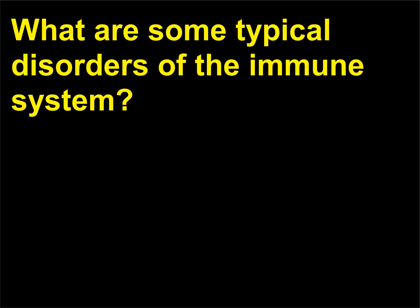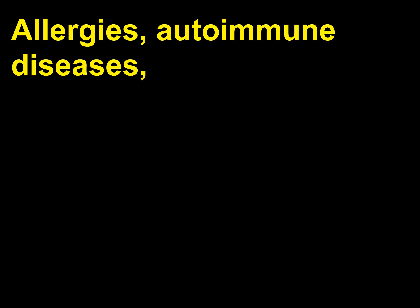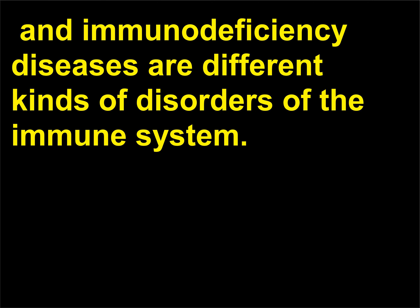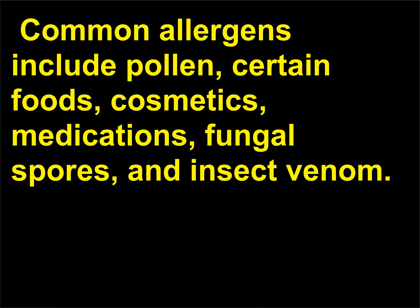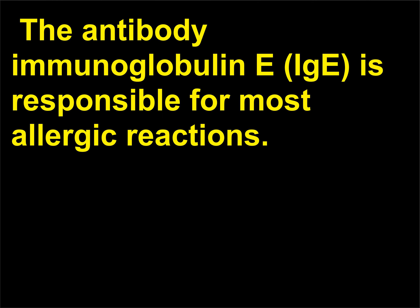What are some typical disorders of the immune system? Allergies, autoimmune diseases, and immunodeficiency diseases are different kinds of disorders of the immune system. Allergies are abnormal sensitivities to a substance that is harmless to many other people. Common allergens include pollen, certain foods, cosmetics, medications, fungal spores, and insect venom. The antibody immunoglobulin E (IgE) is responsible for most allergic reactions.